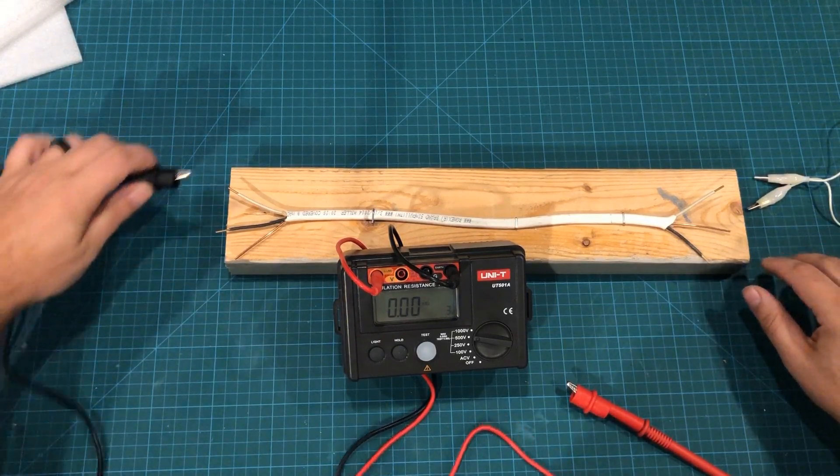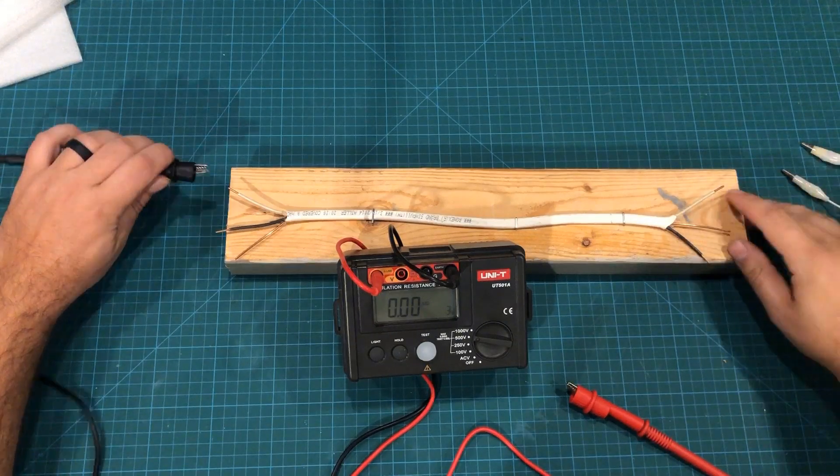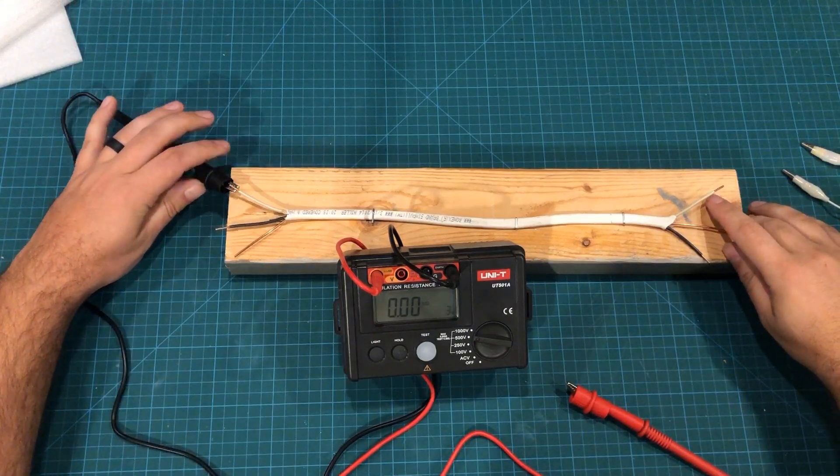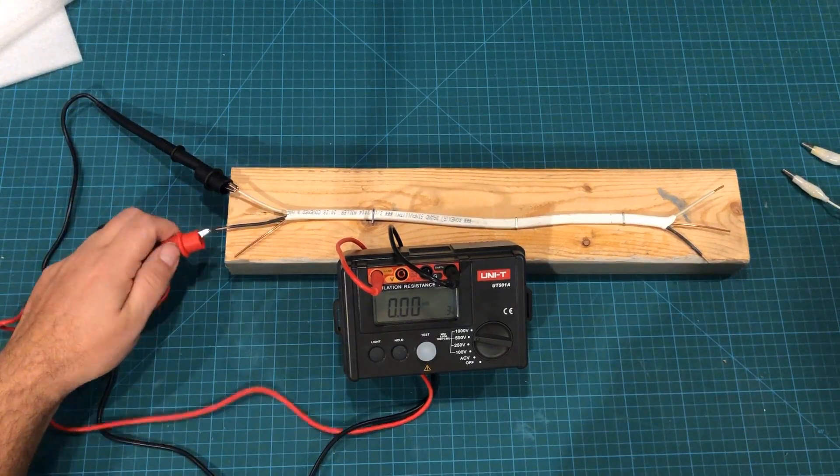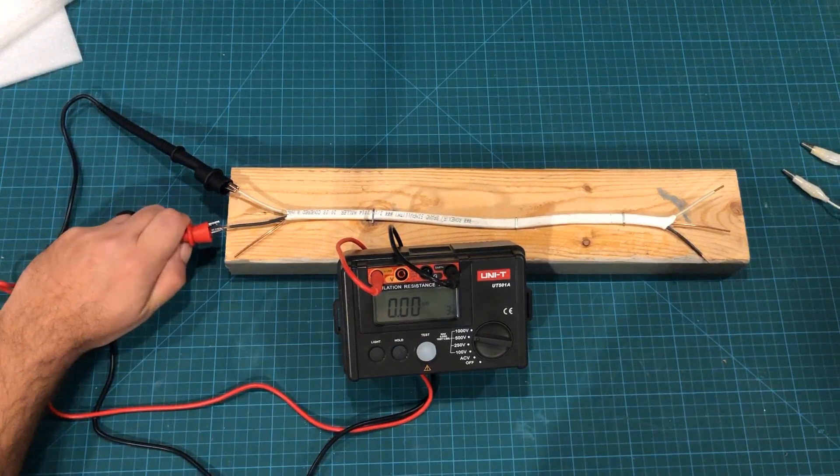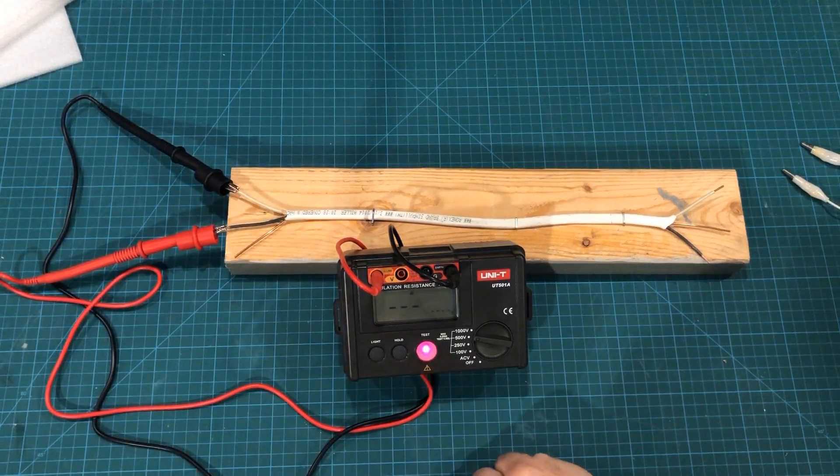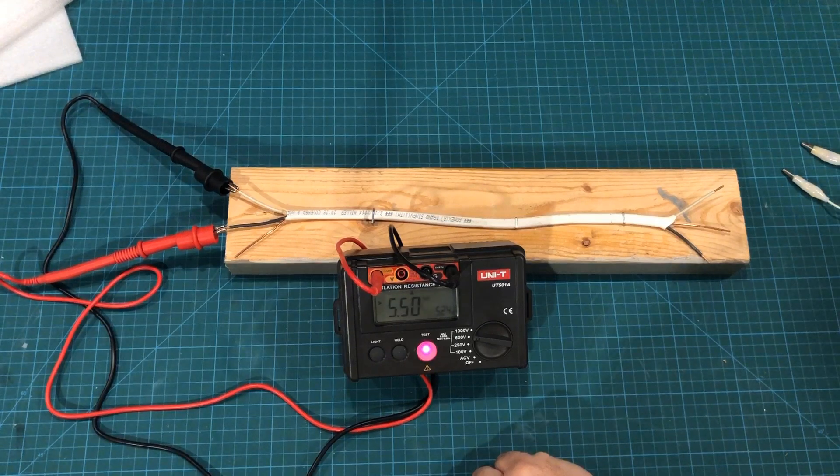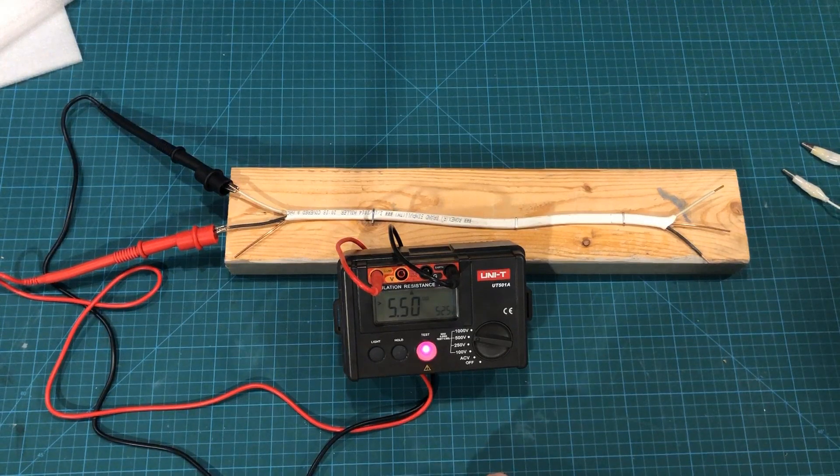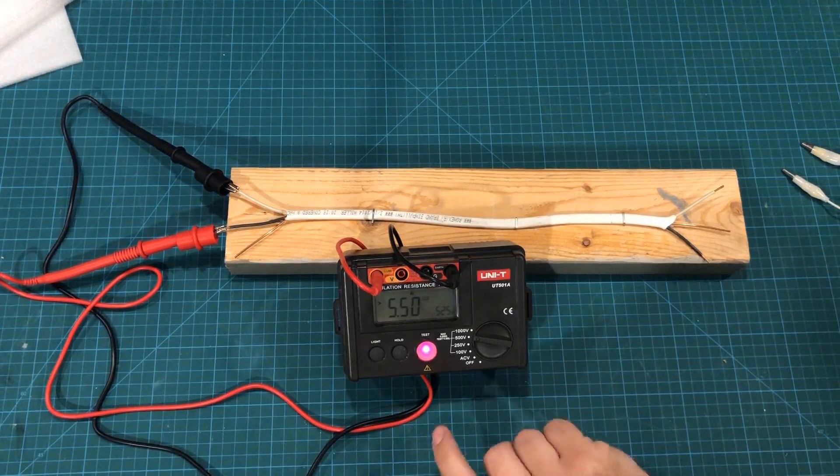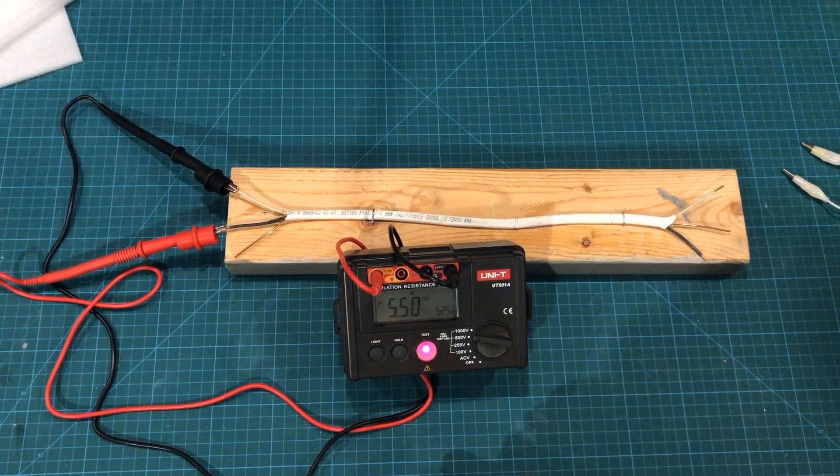We're going to hook this thing up. You'll notice I've removed the alligator clips because the point is for there not to be a connection. We're going to connect up - it doesn't really matter which side. We're going to do the 500 volt megaohm test, and I'm going to push the button. You'll see we're getting the perfect 5.5 megaohms, 525 volts coming out of this thing. There's no connection between these wires, and that's exactly what we would expect. But now we're going to do some more creative tests.